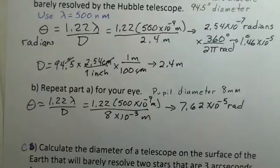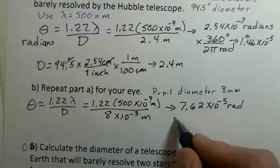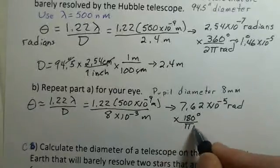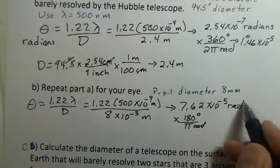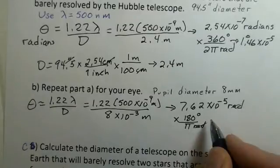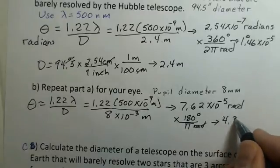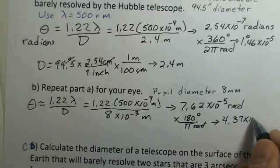7.62 times 10 to the minus 5 radians. And again, let's convert this into degrees. I'm going to use the other version here: 180 degrees over pi radians. The radians would cancel. I come up with an angle of 4.37 times 10 to the minus 3 degrees.